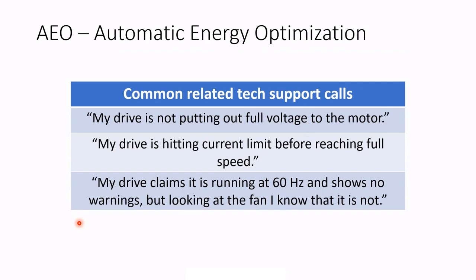Now, some common related tech support calls. Having been in tech support for many years, I would regularly get calls from someone doing an installation or troubleshooting who measures their motor voltage and calls to say there's a problem — the drive is not putting out full voltage to the motor. That is likely because the AEO function is active. I would guide them to parameter 103 to turn AEO off and set it to variable torque, and then their drive would be putting out full volts. Another common call during commissioning: the drive is hitting current limit before reaching full speed. Or, the drive claims to be running at 60 Hz with no warnings, but the fan visibly isn't going full speed — that's another consequence of AEO being too active, reducing voltage by too much so the motor is actually stalling.